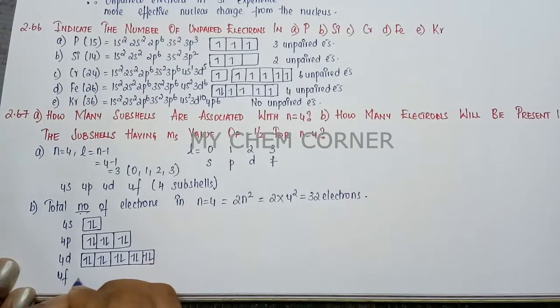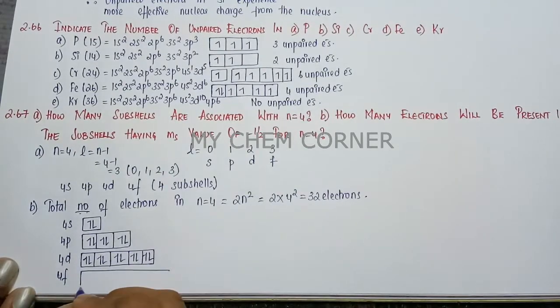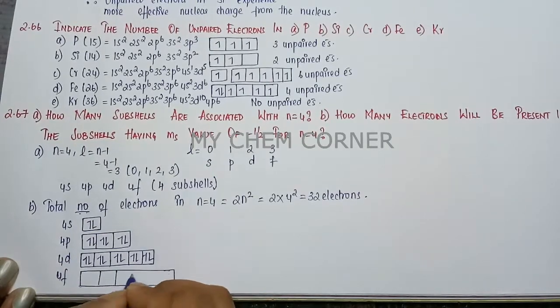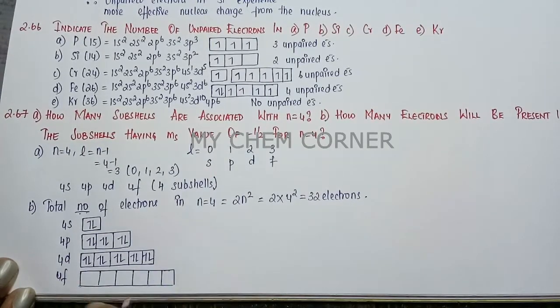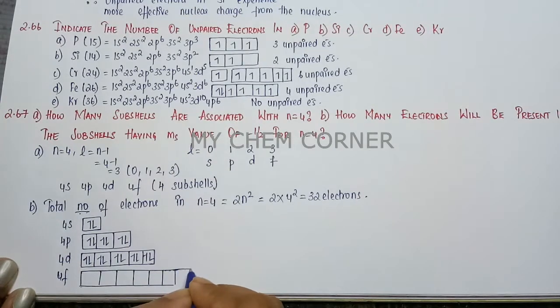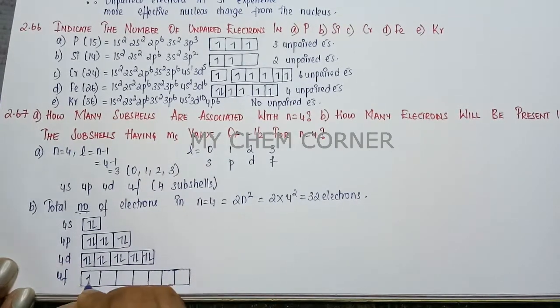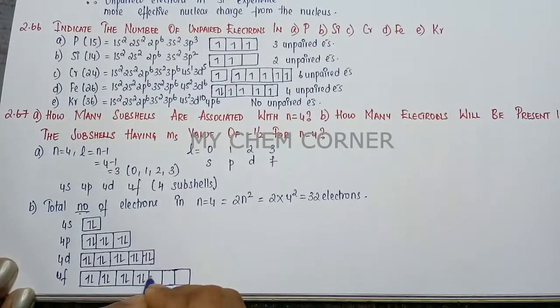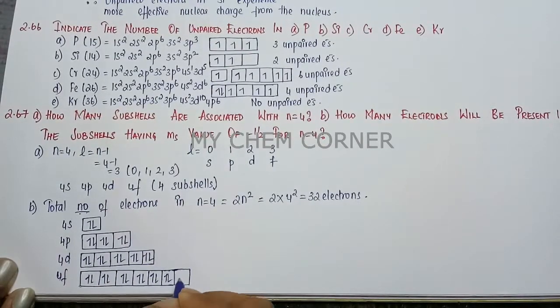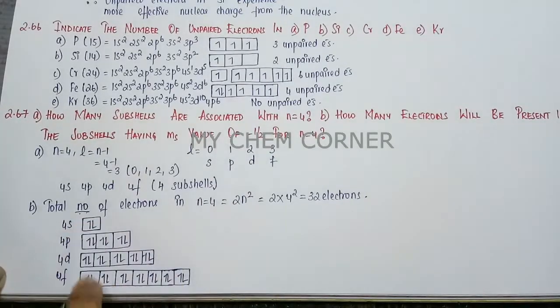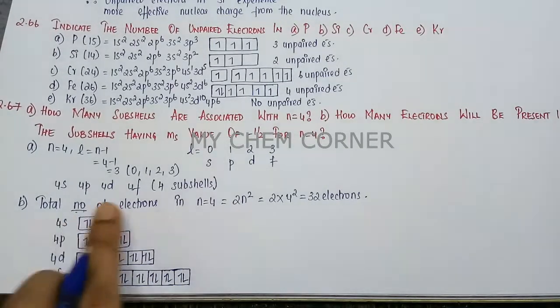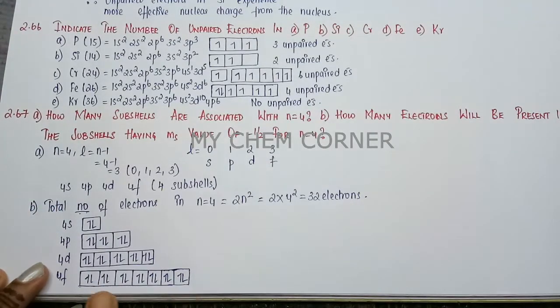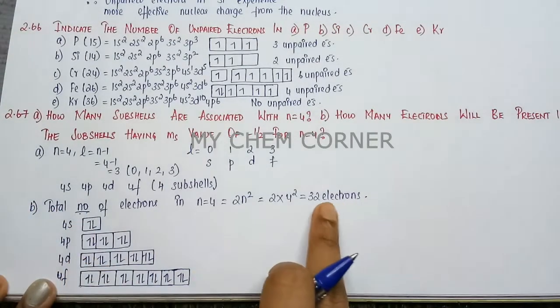And for 4f, with 7 orbitals, 1, 2, 3, 4, 5, 6 and 7. So we have 1, 2, 3, 4, 5, 6 and 7, 1, 2, 3, 4, 5, 6, 7, 8, 9, 10, 11, 12, 13, 14. So we have 2 electrons in each orbital and that completes the entire thing. So here we can say that when you manually count them, you will get 32 electrons.